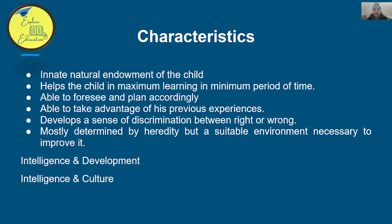Intelligence is mostly determined by heredity, but a suitable environment is necessary to improve it. In the nature-nurture debate, intelligence is mainly determined by genes, but if the environment does not support it, even good genes will not allow intelligence to flourish. A suitable environment is necessary for at least a minimum level of intelligence.